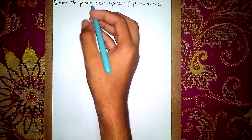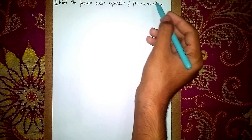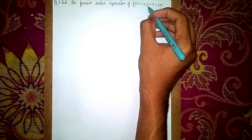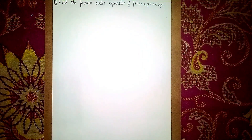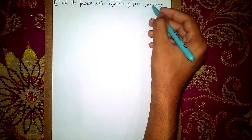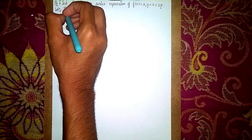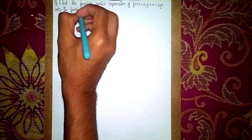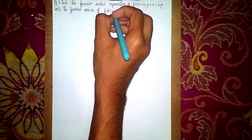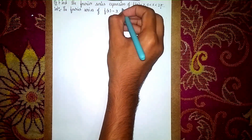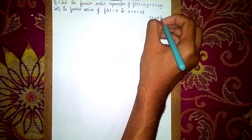Hello, welcome back to my channel. Today's question: find a Fourier series expansion of f(x) = x, where 0 < x < 2π. Always remember, 0 to 2π are our limits — don't get confused. It is given as an interval with less-than signs. So first write the solution, then write the function.